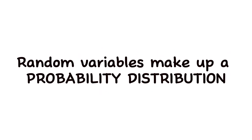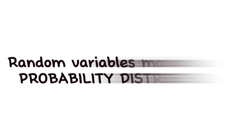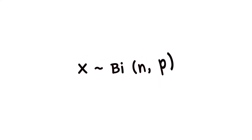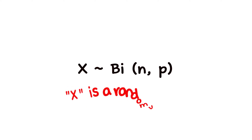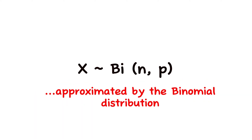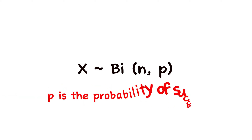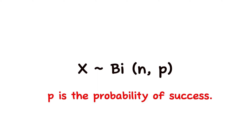Random variables make up probability distributions. Whenever binomial random variables come together they form what we call a binomial probability distribution. The mathematical notation we use is X ~ BI(N, P), which states that X is a random variable approximated by the binomial distribution. The binomial distribution depends on two parameters: N, the number of trials, and P, the probability of success attached to each trial.